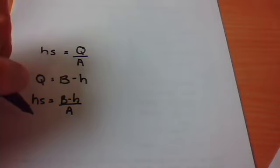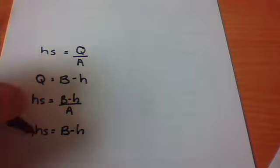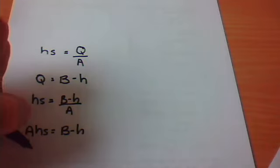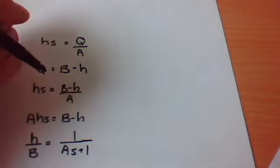Now we need to just solve for height, because it asks for the transfer function, where height is the output and B is the input. So we can just solve, take A over here. So AHS is equal to B minus H. We can just do a bit of solving around, take out height on the left-hand side, put A on to the right-hand side, and we'll get H over B is equal to 1 over AS plus 1, which looks familiar. That's the first-order transfer function.